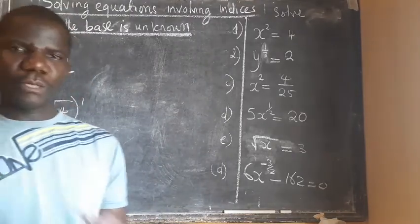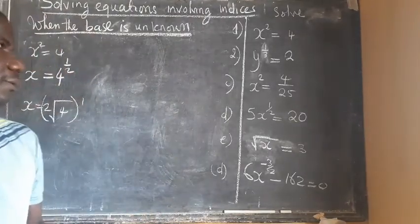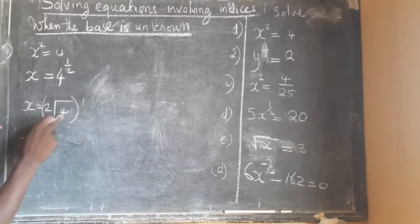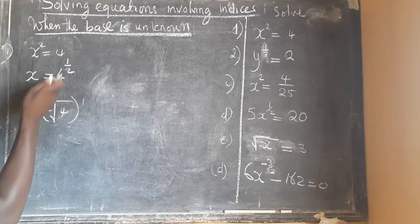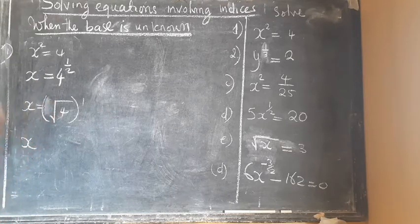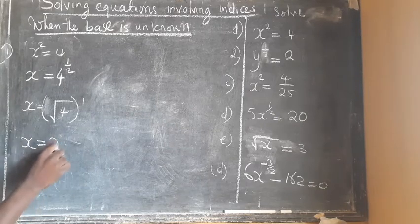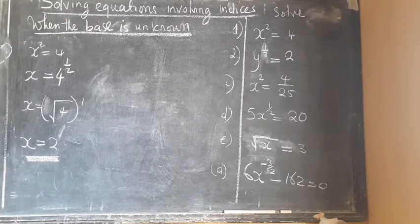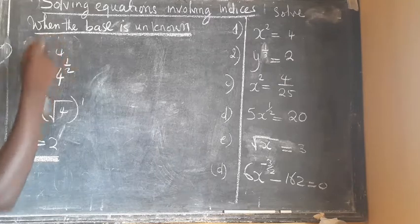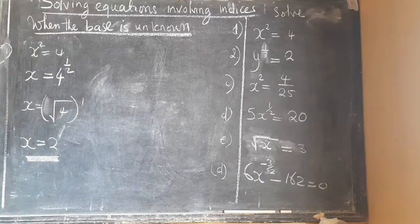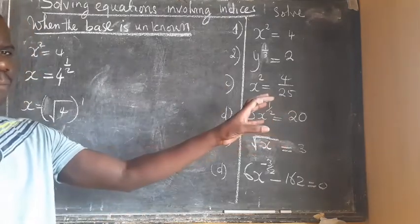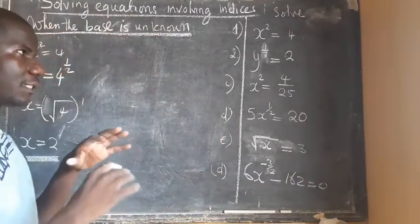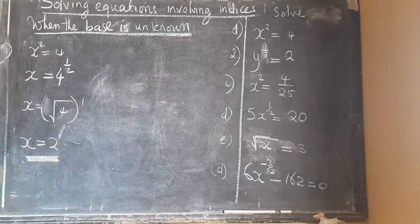Please refer to lesson two on indices — it covers this part well. The square root of four is two, and since the power is one we just get two. So our answer is x equals 2. You can verify: two squared equals four. The key is taking the multiplicative inverse to the other side — that is what assists you, and it's easier than trying to make the bases the same.